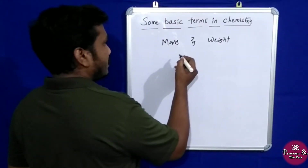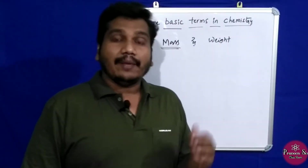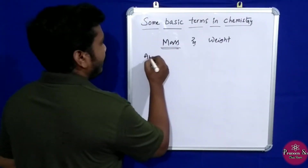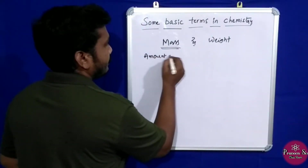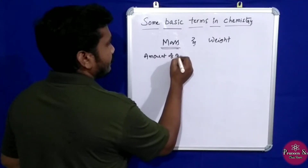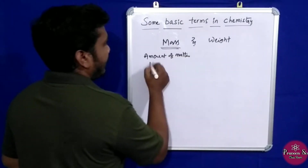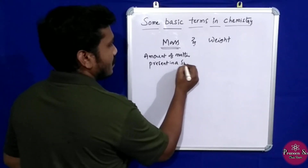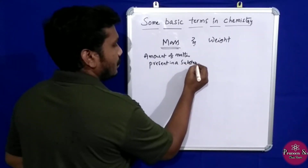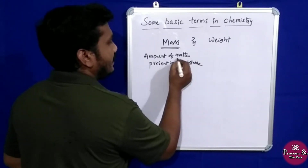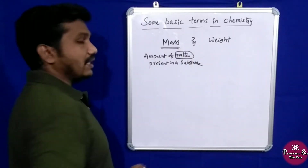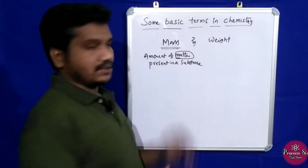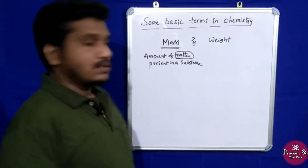So what is mass? Mass is the amount of matter present in a substance. Any substance — how much matter is there? That is nothing but mass.